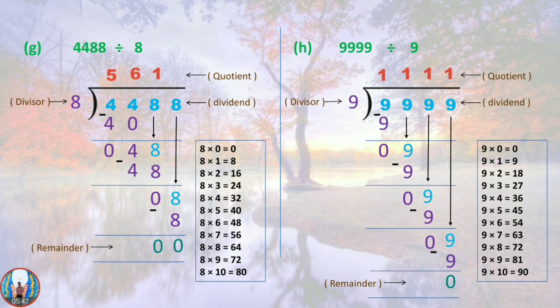Question H: 9999 divided by 9. 9 ones are 9; remainder 0. Again 9 ones are 9, and again 9 ones are 9. So the remainder is 0 and the quotient is 1111.